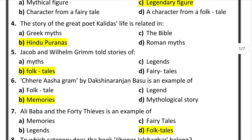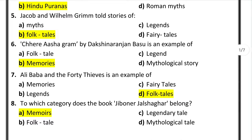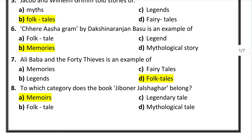Question number 5: Jacob and Wilhelm Grimm told stories of — the correct answer is folk tales. Question number 6: Chede Asa Gram by Dakshina Ranjan Basu is an example of memories. Question number 7: Ali Baba and the Forty Thieves is an example of folk tales.